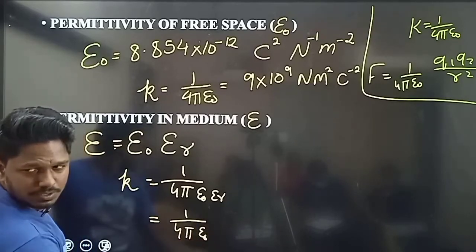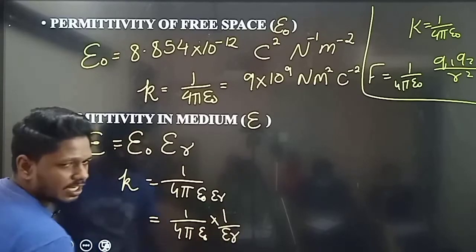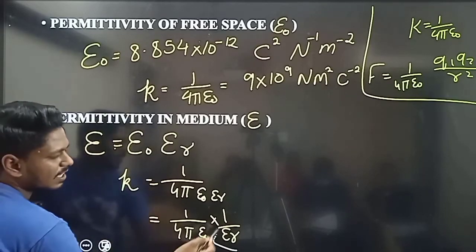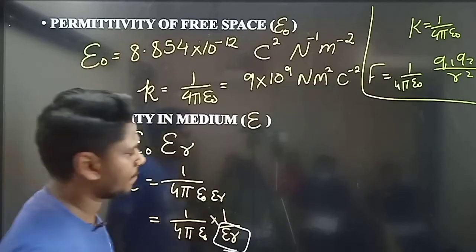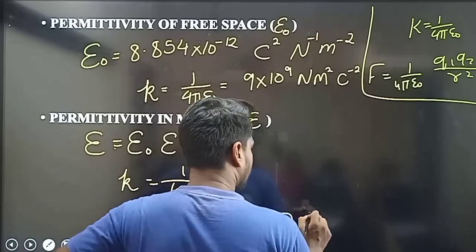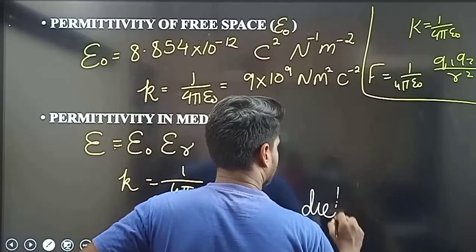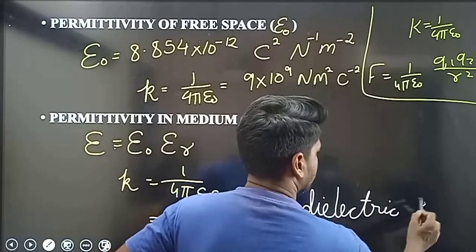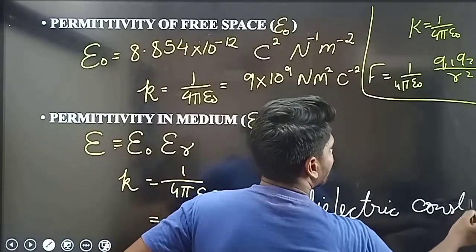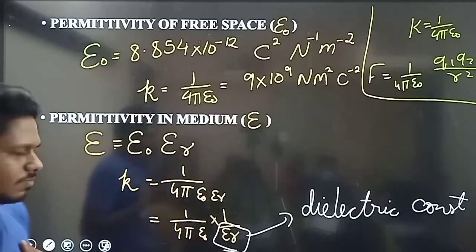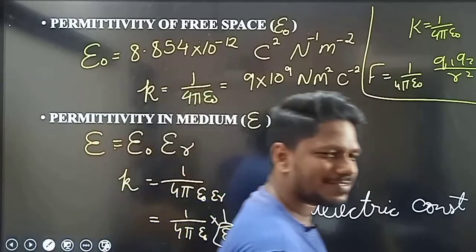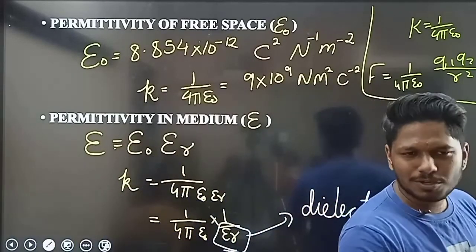This value is constant times 1 by epsilon_r. The medium has a value — this is the permittivity, this is the dielectric constant. Water has a dielectric constant of about 80 or 81.